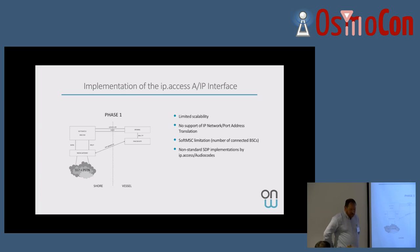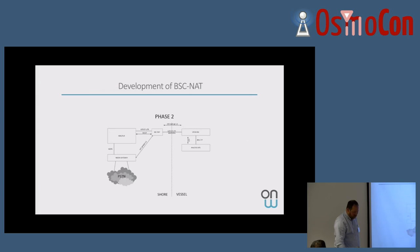Of course, this setup has very limited scalability. You need to, even if it's soft, you still need to define one trunk for each BSC. And there is absolutely no support for IP address translation, nothing. And we had also to take care of the non-standard SDP implementation that had been done by IP access at the time on the audio codes media gateway. So that was seriously a pain.